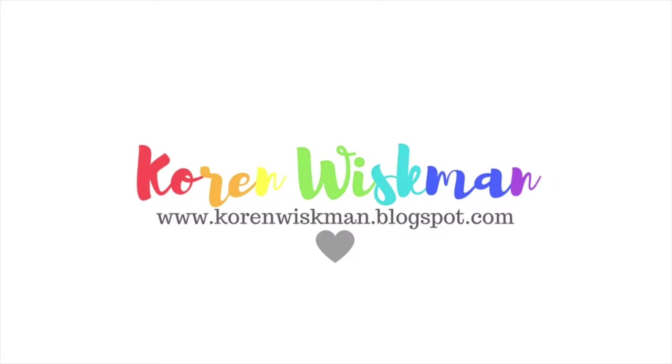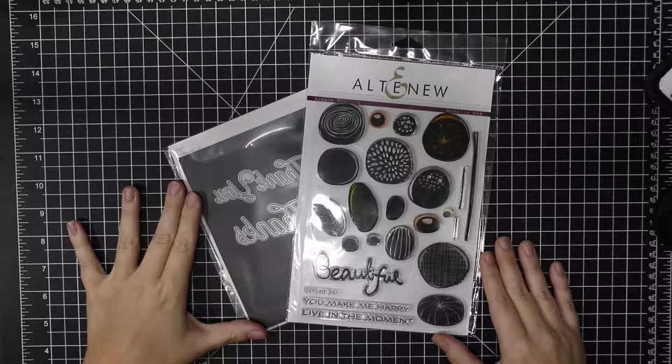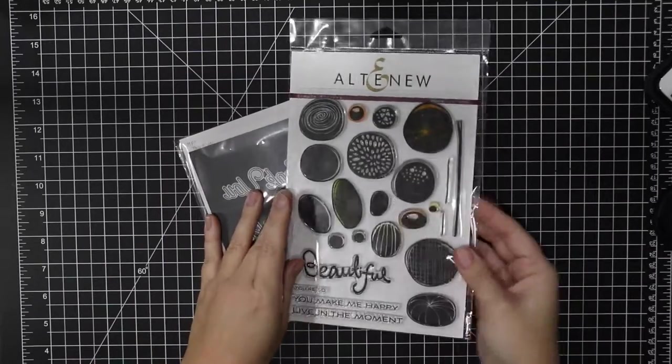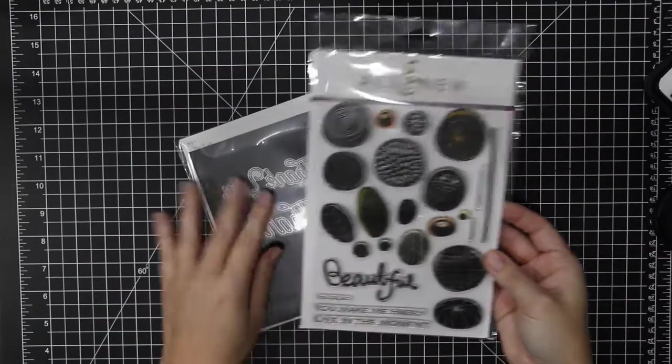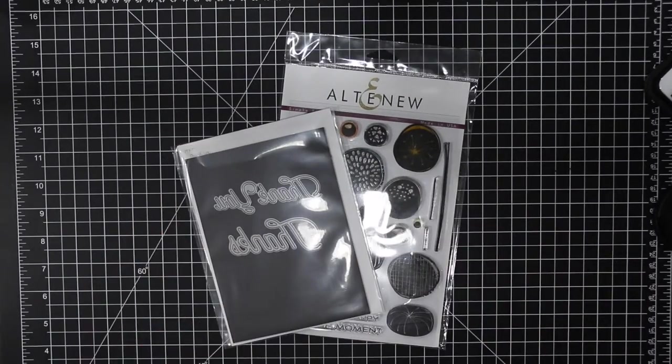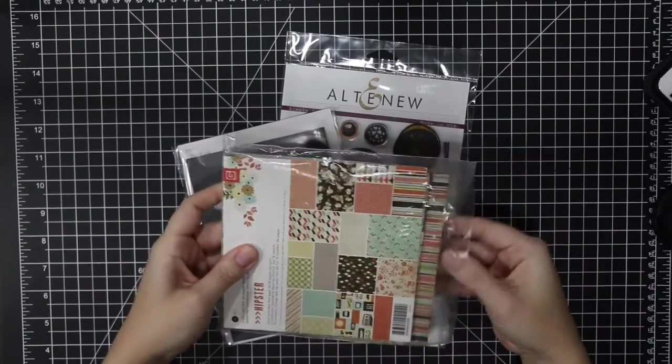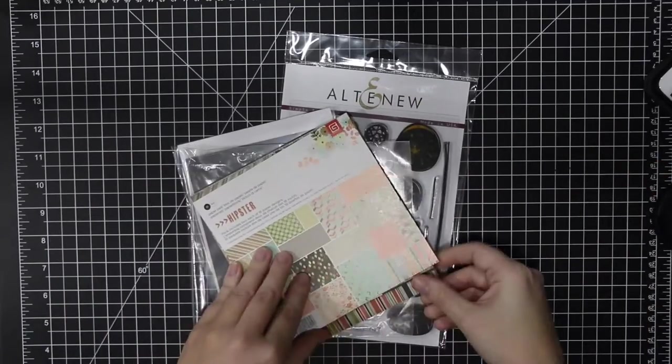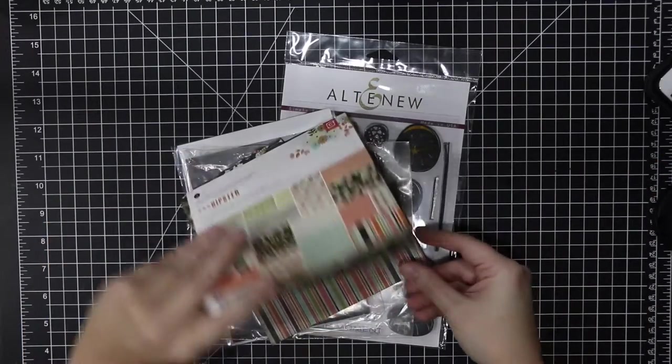Hello everyone! Welcome to another card video. Today we're using Altenew's Simple Flowers stamp set and My Favorite Things thanks die. We're also using BasicGrey's Hipster 6x6 paper pack.